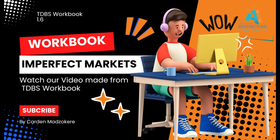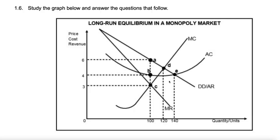This one would say: study the graph below and answer the questions that follow. This is the long-run equilibrium in a monopoly market. How do we know it's long-run? Well, we see economic profit here. And how do we also know it's monopoly?